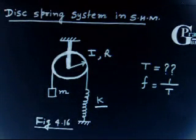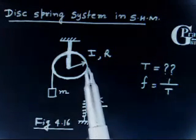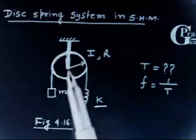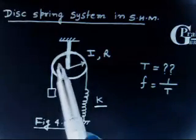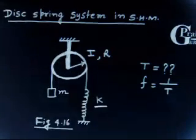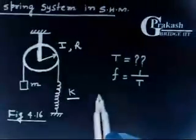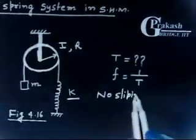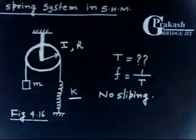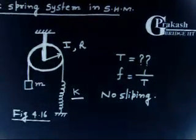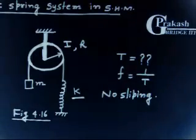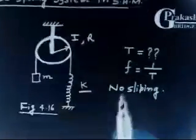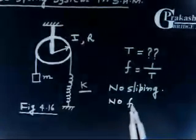There is no slipping over the pulley. So this thread basically has no slipping — it goes this side, so it rolls. This means there is pure rolling, so no slipping. And there is also no friction in the axis of the pulley. So everywhere you have no friction.